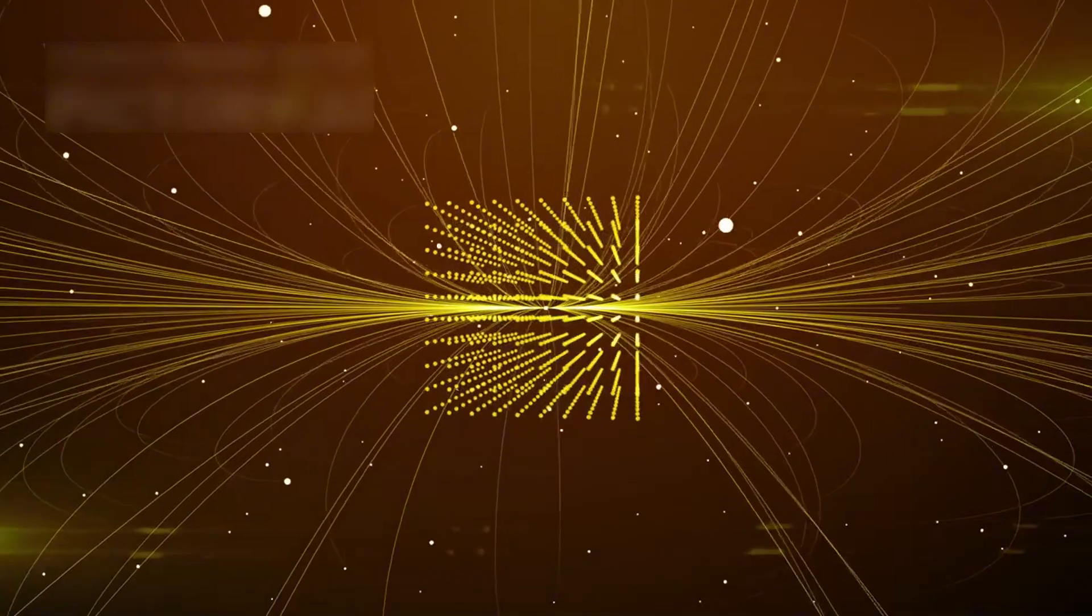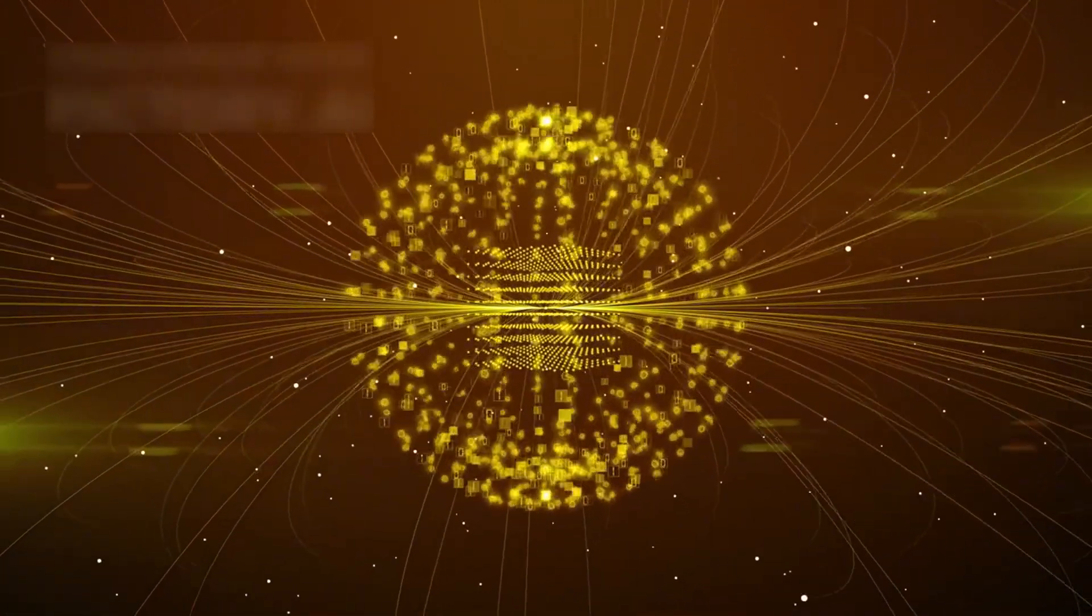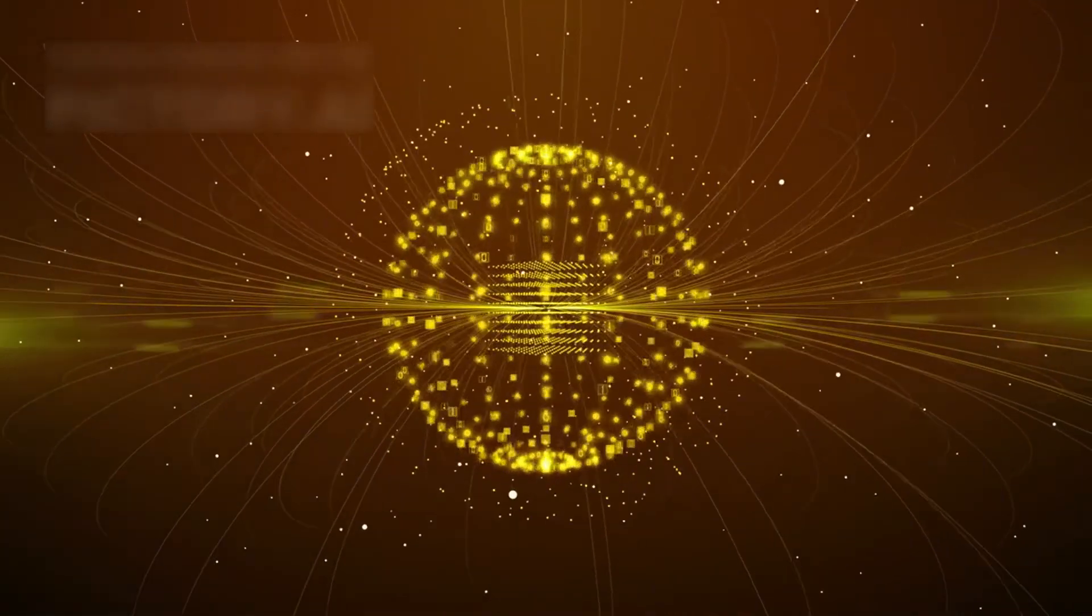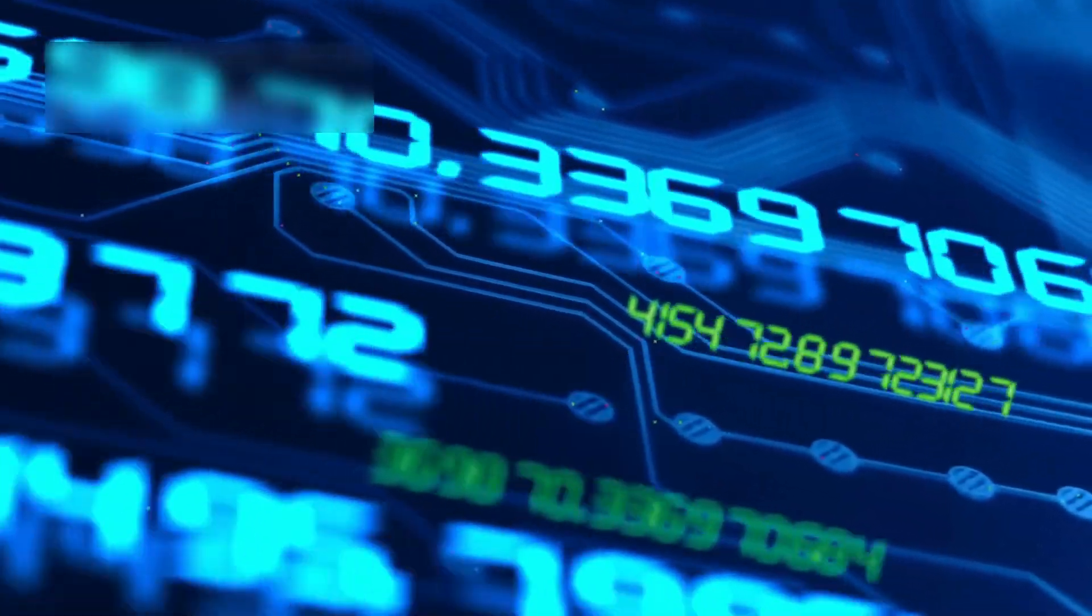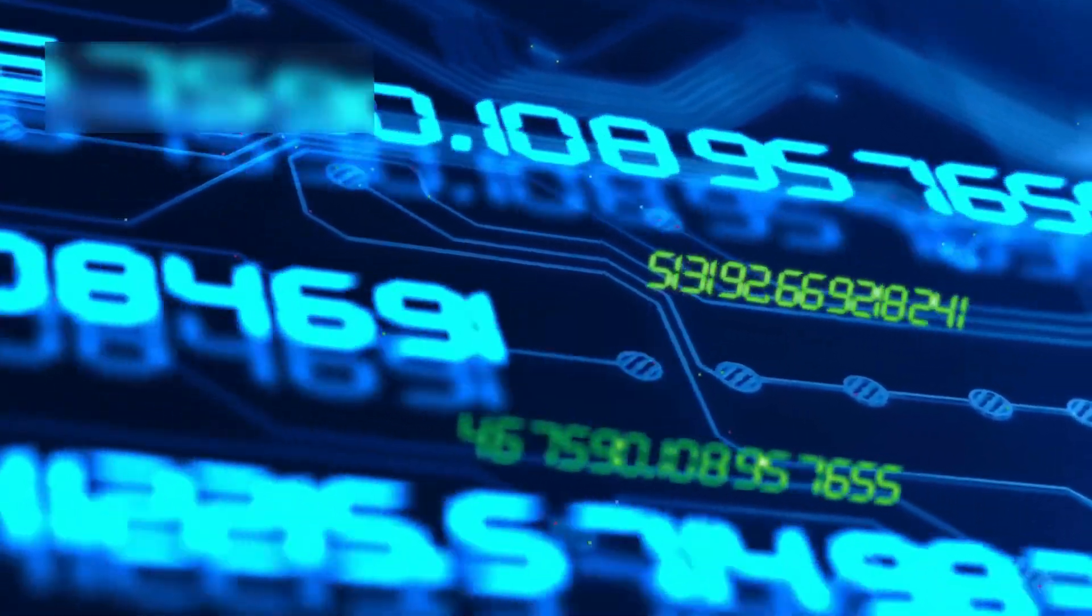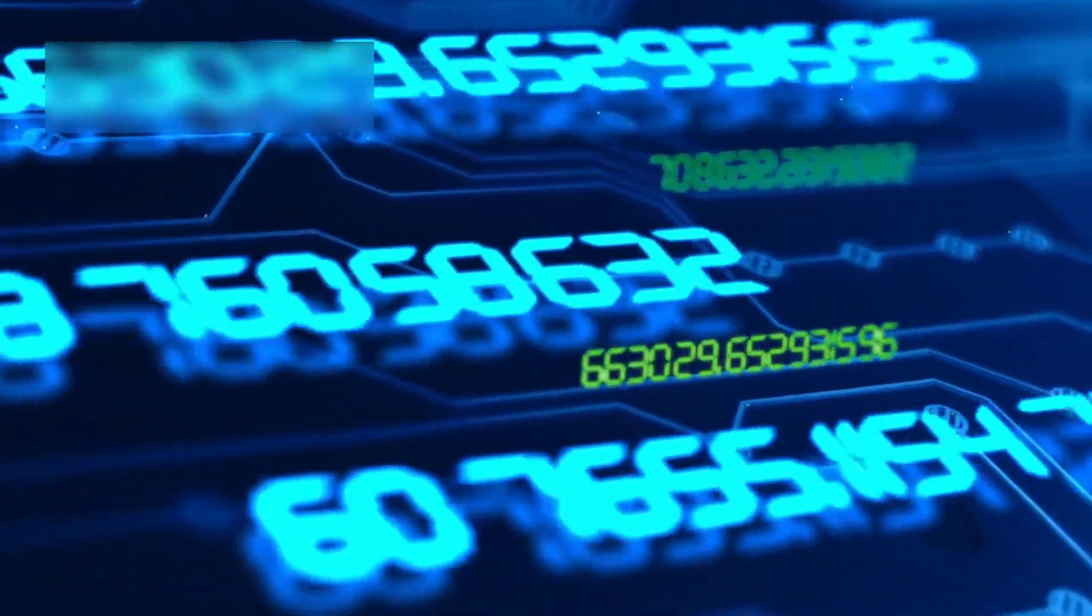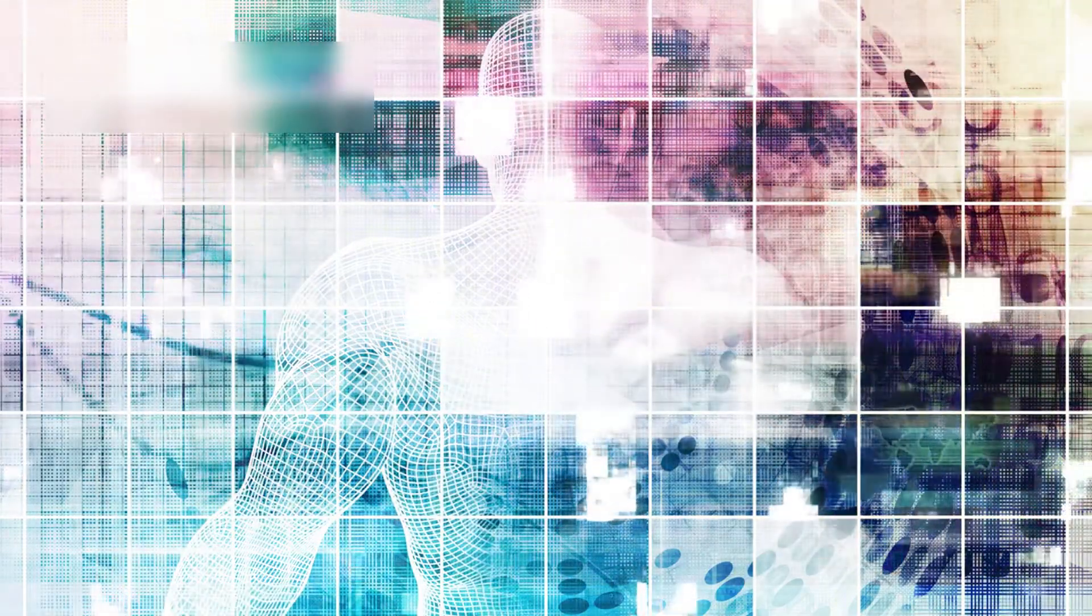In contrast to traditional computers, which process information using bits, either zero or one, quantum computers like Willow use qubits, which can exist in multiple states at once. Thanks to the principles of quantum mechanics, qubits can occupy a superposition, meaning they can represent both zero and one at the same time. This isn't just a clever trick, it's a fundamental shift in how we think about processing information.